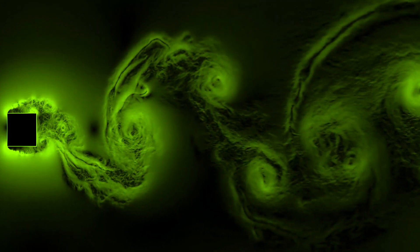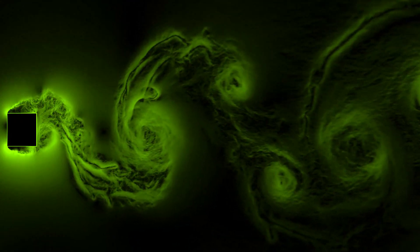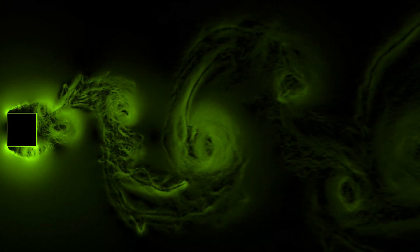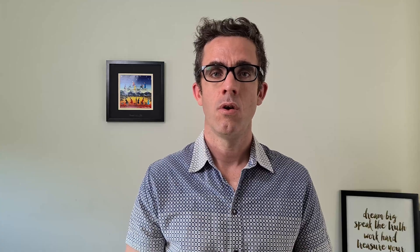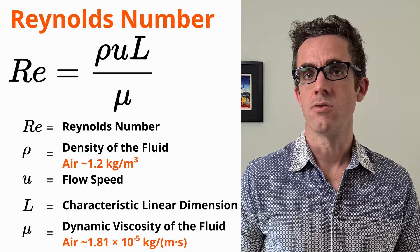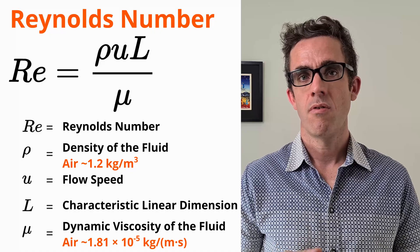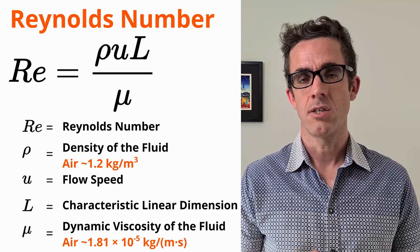When you build structures near each other, these eddies can cause damaging effects on adjacent buildings — but having buildings beside you doesn't necessarily make your design better or easier. Another thing to realize is that the higher you go, the higher the wind speed, and this has to do with a factor known as Reynolds number.